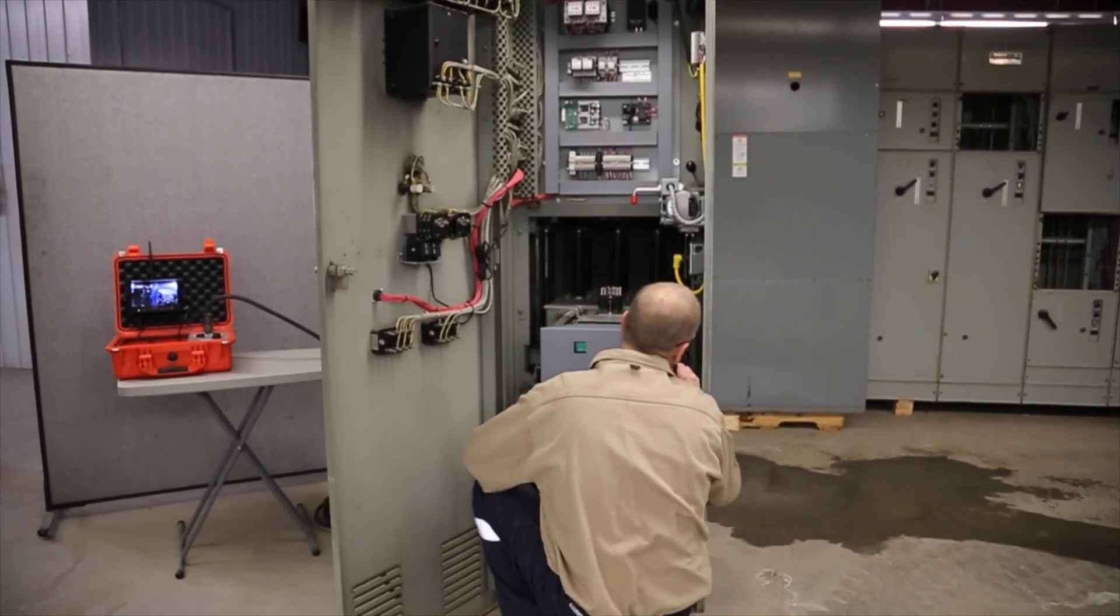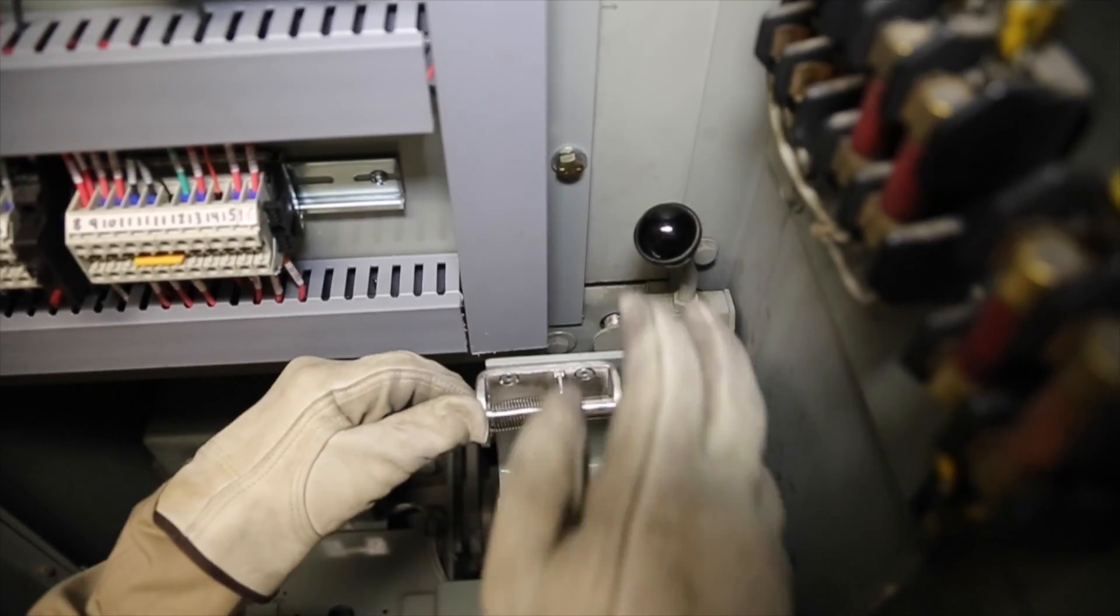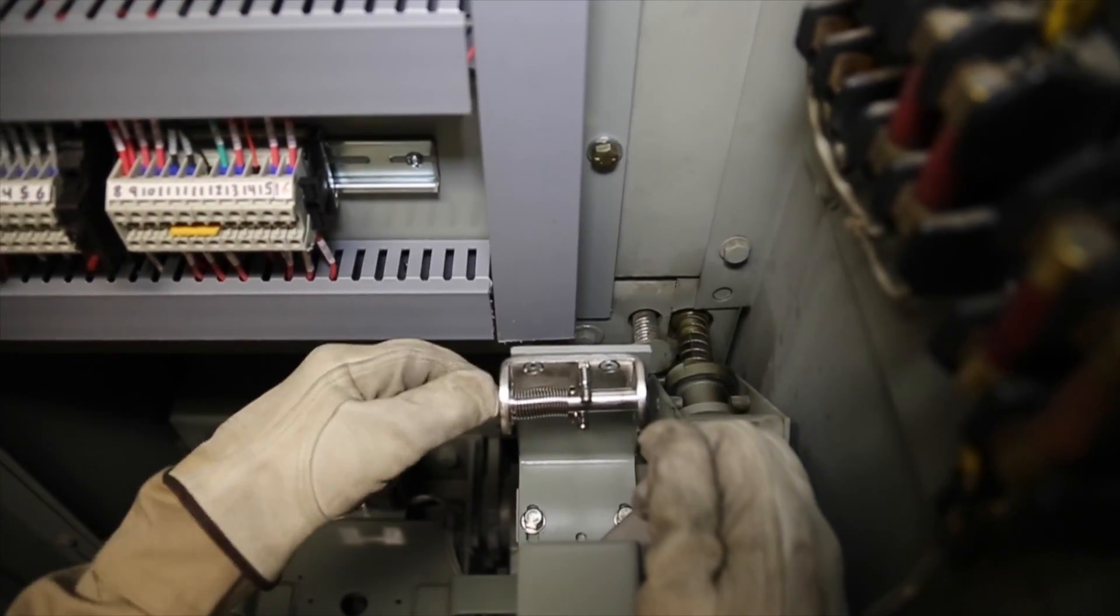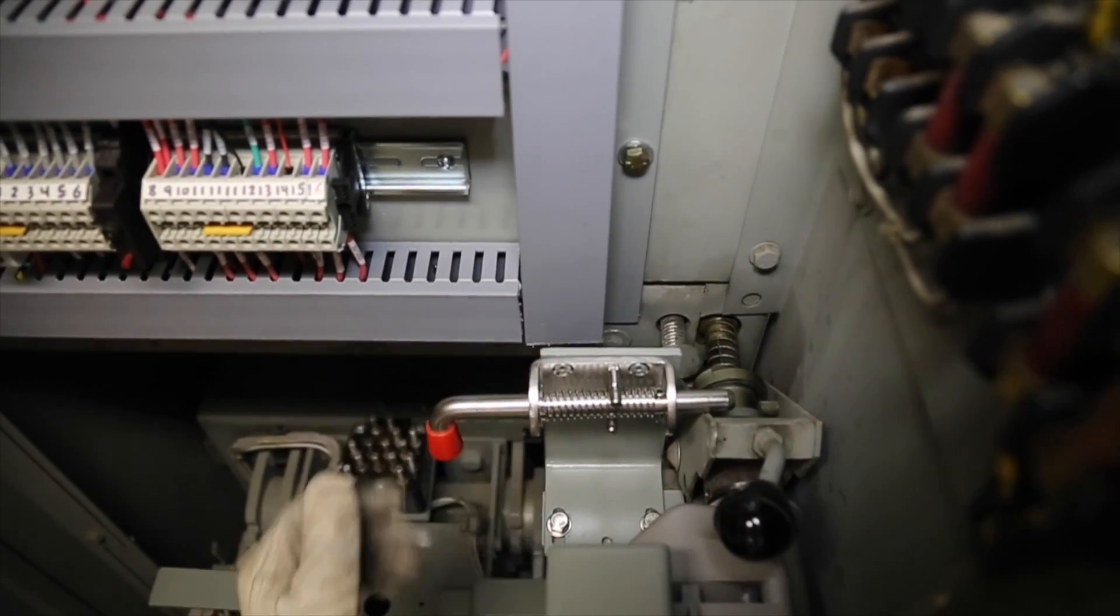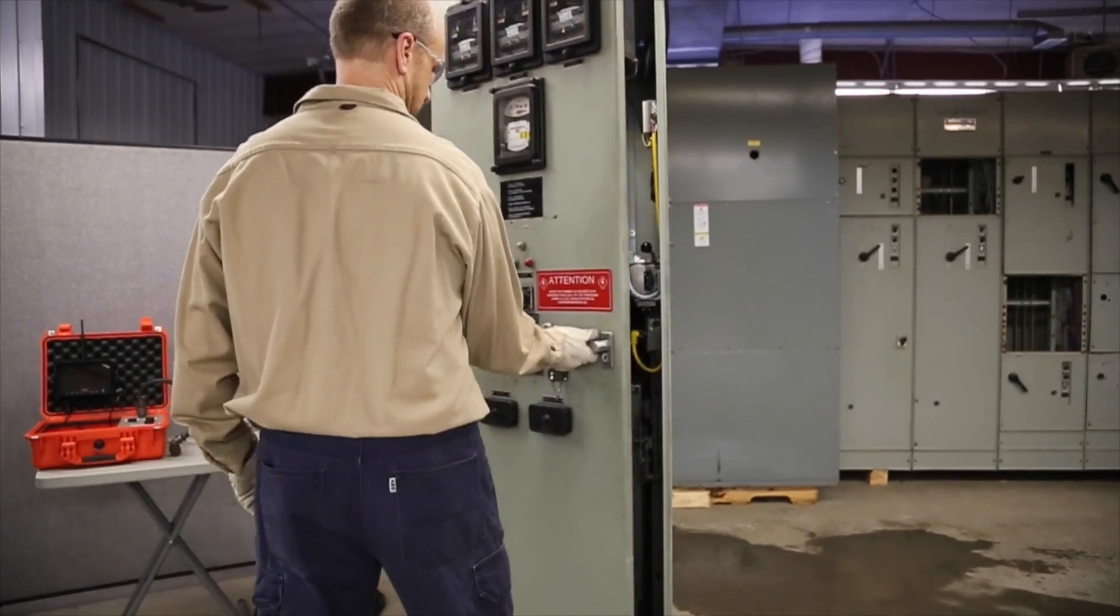Ensure that the breaker positive interlocked roller is centered in the lower notch of the interlocked cam plate. Align the racking motor coupling and engage the clutch handle and hold down pin.